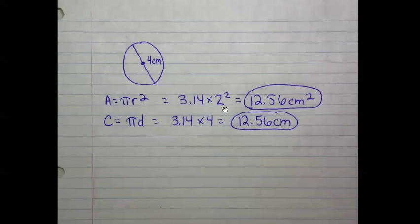And then my unit is square centimeters since it's area. The formula for circumference that's the most easy to work with for this problem is pi times the diameter, since the diameter is given. And so 3.14 for pi times 4 is also 12.56, but this one is just centimeters, not centimeters squared, because circumference is a measurement of length.